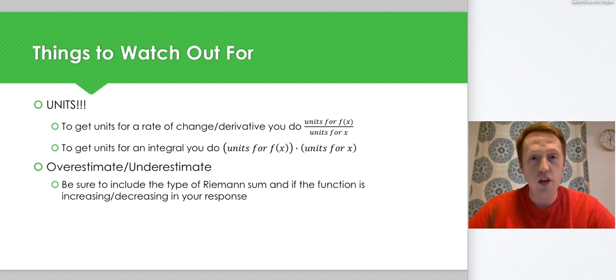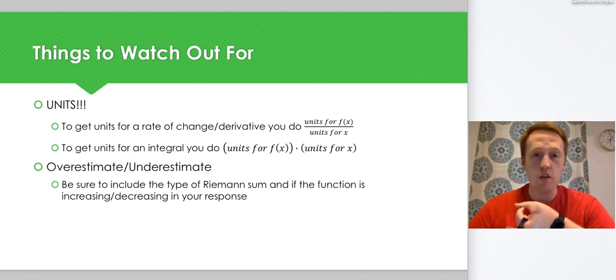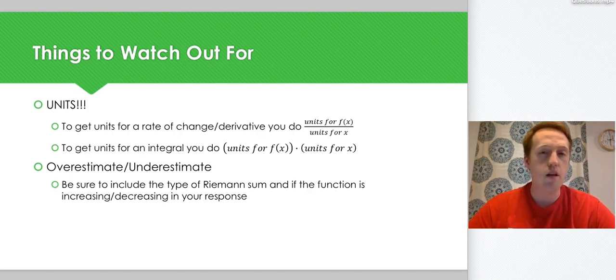With overestimate and underestimate, make sure for part of your explanation that you include what kind of Riemann sum you did, and if the function was increasing or decreasing. Those two things are critical when explaining whether a left or right Riemann sum overestimated or underestimated. Remember, we can also do trapezoidal based on concavity.